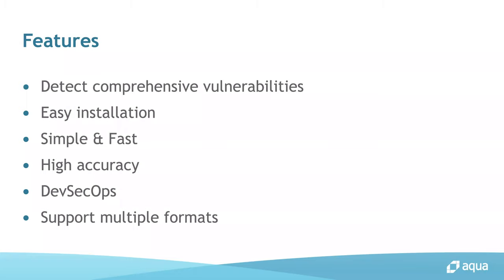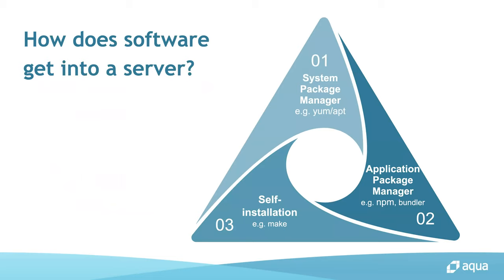The first feature concerns the types of vulnerabilities Trivy can detect. Software gets into your server in three ways: via a system package manager like YUM or apt-get, via an application package manager like NPM or Bundler, or via self-installation such as make or downloading a binary manually. Trivy supports the first and second methods. Most scanners support only one of these, so supporting both is an advantage of Trivy.